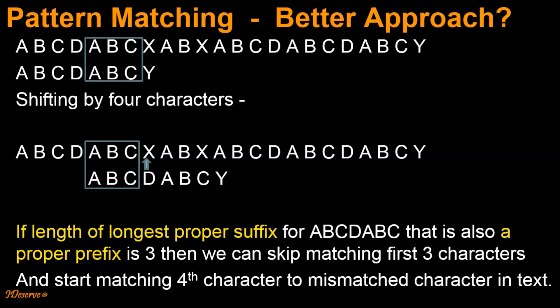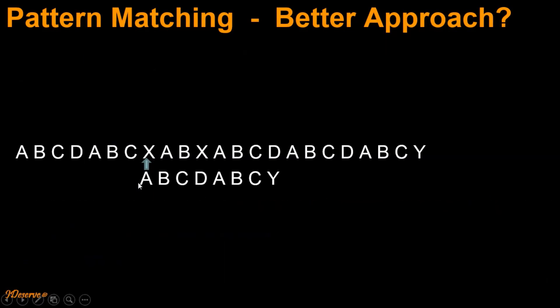Rule number 1 is: in the second part, we look at the substring of the pattern that has matched with the text just before the first mismatch, find out the LPS value, pick the character at that index, and start matching with the mismatched character from the text. Rule number 2 is: if the character at index 0 from the pattern mismatched with the text, then we just right shift the pattern by one character. I hope the algorithm explanation was clear. Thank you and cheers.